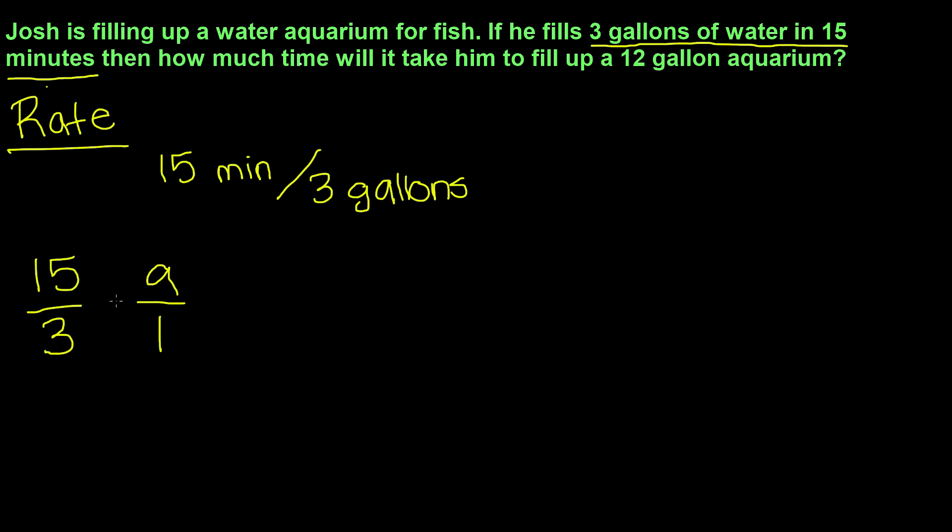Now we cross multiply. So I'm going to multiply 3 by a and then I'm going to multiply 15 by 1. When I multiply 3 by a, I get 3a. And then when I multiply 15 by 1, I get 15.